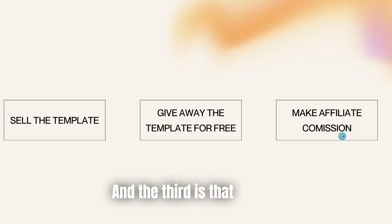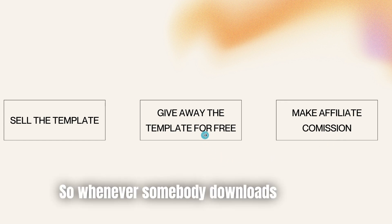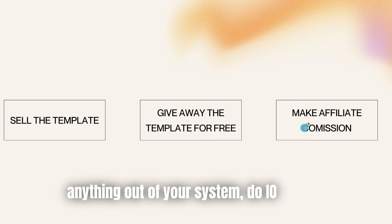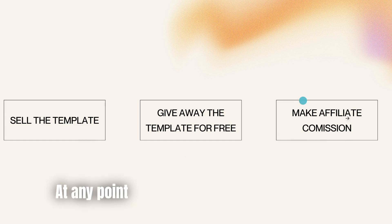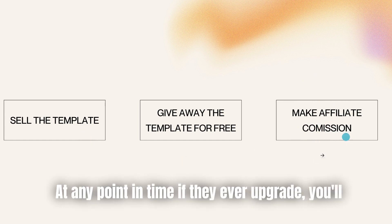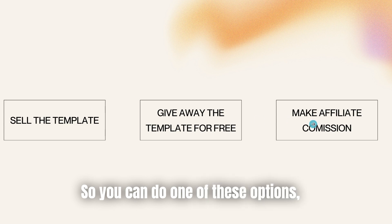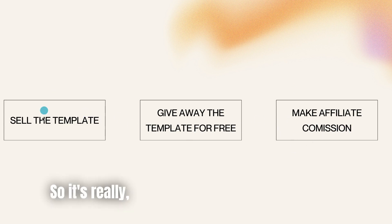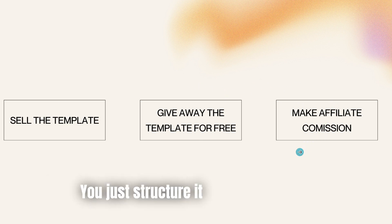The third option is that you can make affiliate commissions. Whenever somebody downloads or copies anything out of your Systeme.io account and they haven't signed up to Systeme.io, if they ever upgrade at any point in time, you will make an affiliate commission from Systeme.io. You can do one of these options or all three — it's really flexible, and you just structure it however you like.